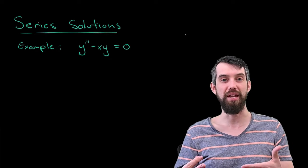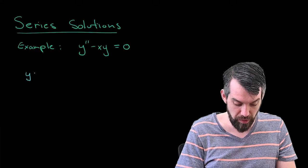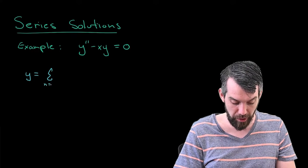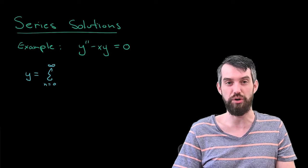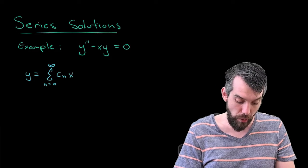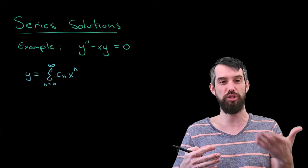In particular, I have a famous equation called the Airy equation, y double prime minus xy is equal to zero. And what we're going to work through in this example is how to use a series solution to find the answer.